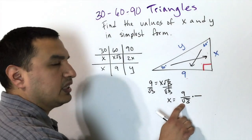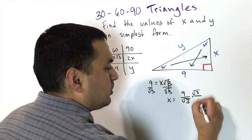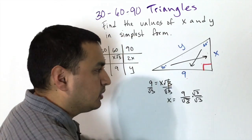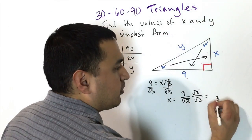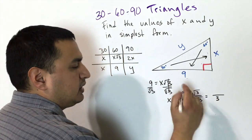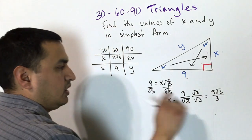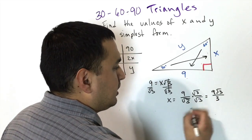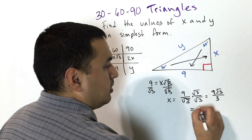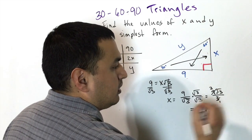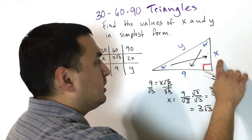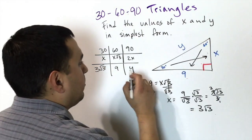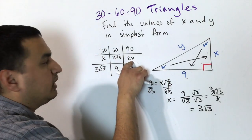We can't leave a radical in the denominator, so we rationalize by multiplying top and bottom by √3. This gives (9√3)/3, and since 9 ÷ 3 = 3, we get x = 3√3. So the side across the 30° angle is 3√3.